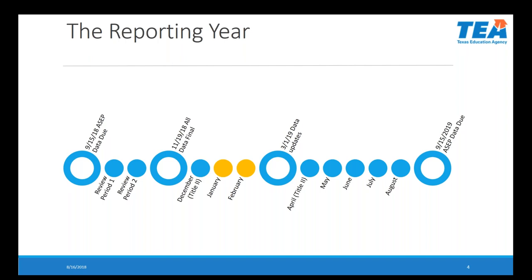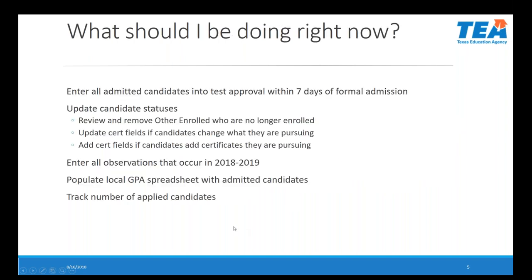A question came in: will you send us the webinar PowerPoint? If you registered for this webinar, you will be able to get a hold of it afterwards — we'll post it there. So, what should I be doing right now to stay on top of my ASAP data? As we mentioned, entering all formally admitted candidates into the test approval screen within seven days of their formal admission is something that needs to be happening throughout the course of the academic year.